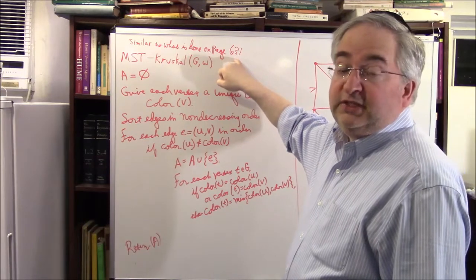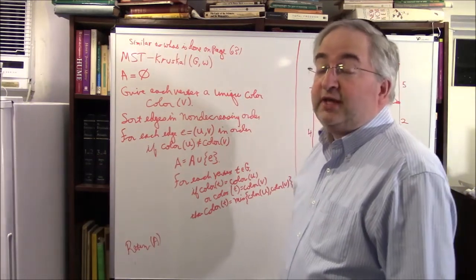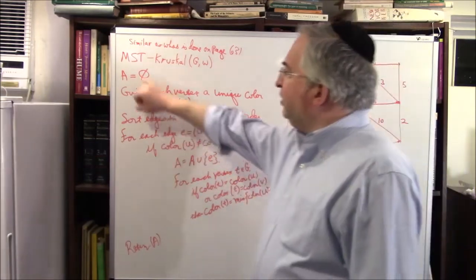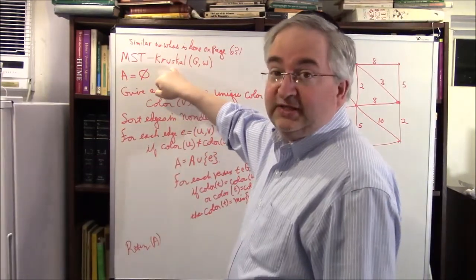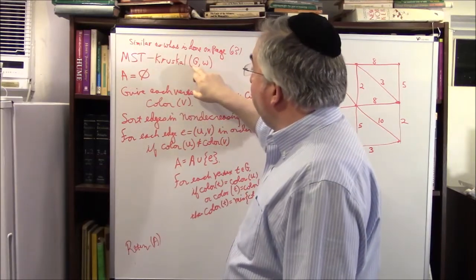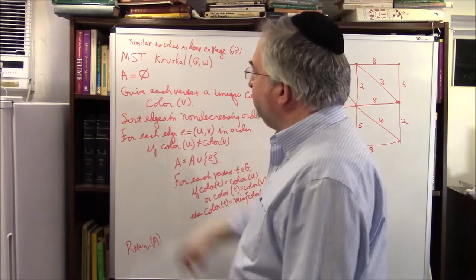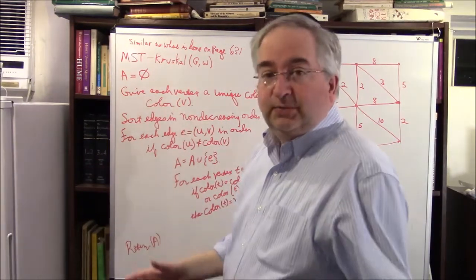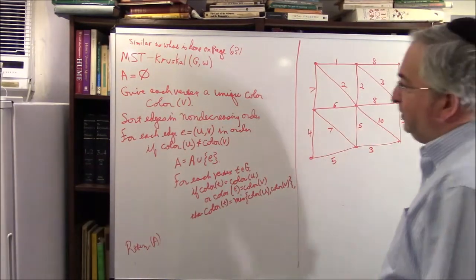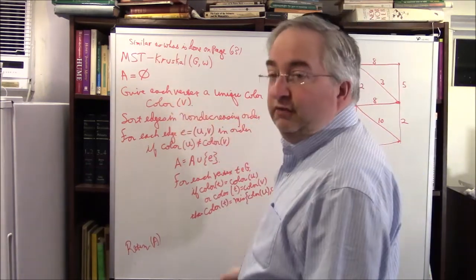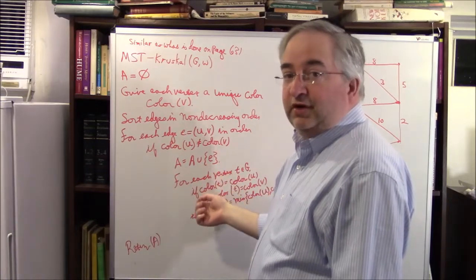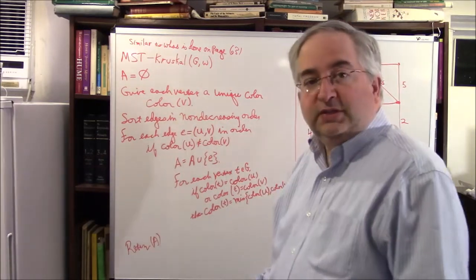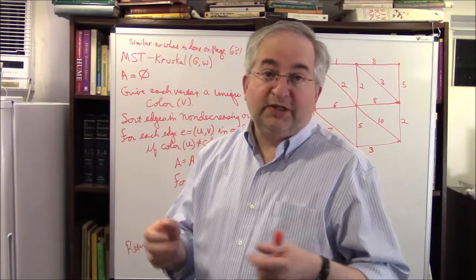MST-Kruskal — that's the guy's name; MST stands for minimum spanning tree. You're given a weighted graph. Start off: the tree A is empty. Give each vertex a unique color, call it color(v). Sort edges in non-decreasing order — non-decreasing means increasing, and if two edges have the same weight, the order doesn't matter. For each edge E between U and V in sorted order — this is a greedy algorithm, the epitome of a greedy algorithm — if the colors are not equal, add the edge to the tree.